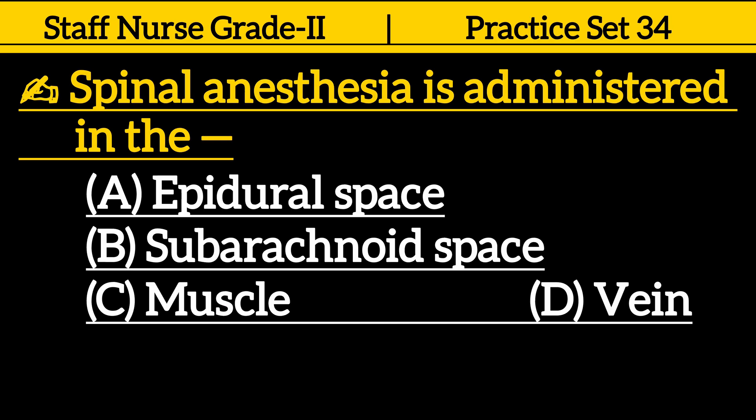Next one is, spinal anesthesia is administered in the: option A. Epidural space, option B. Subarachnoid space, option C. Muscle, option D. Vein.